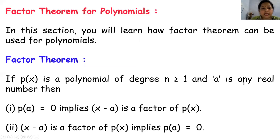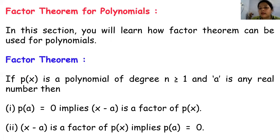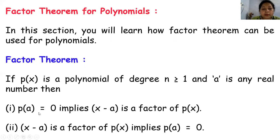If p(x) is a polynomial of degree greater than or equal to 1, and 'a' is any real number, then p(a) equal to 0 implies (x minus a) is a factor of p(x). Here p(a) is the remainder. So remainder equal to 0 means x minus a is the factor of p(x).